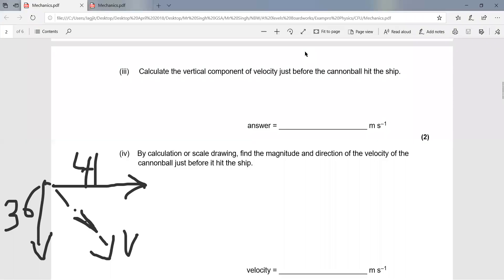To find the direction, you always use tan theta, which is 36 over 41, and rearrange to get theta, which is 42 degrees.